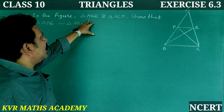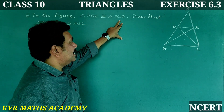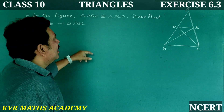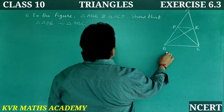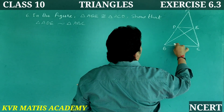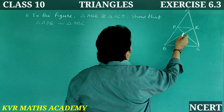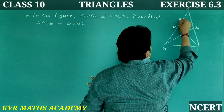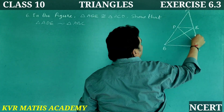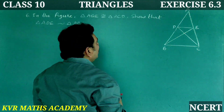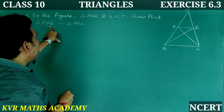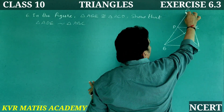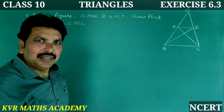Problem 6: In the figure, triangle ABE is congruent to triangle ACD. Show that triangle ADE is similar to triangle ABC. Triangle ABE is congruent to triangle ACD — see this triangle. What we have to show: triangle ADE is similar to triangle ABC. Let us prove.